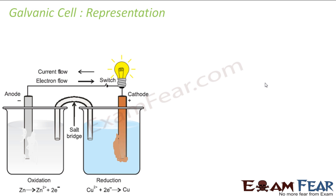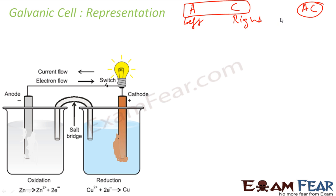There was confusion about which electrode to put on the left and which on the right. So IUPAC came with the convention that anode will be on the left and cathode will be on the right. A good mnemonic is AC — like air conditioning: A comes first, C comes next. So anode on the left, cathode on the right — this is the IUPAC representation convention.